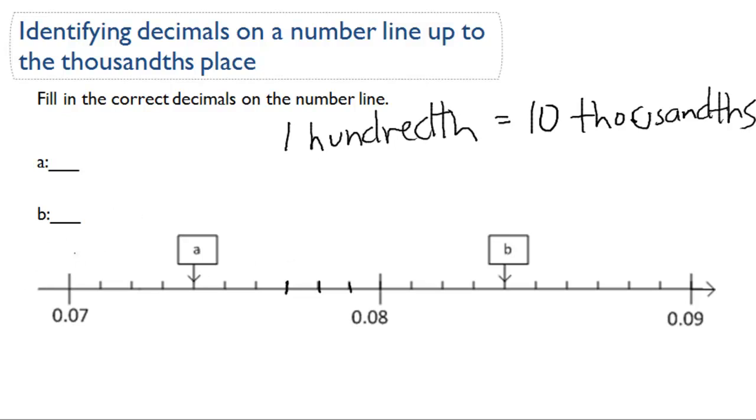So here, this first point we'd have 0.071, or seven hundredths and one thousandth, and 0.072, 0.073, and A is 0.074.